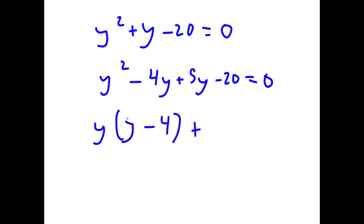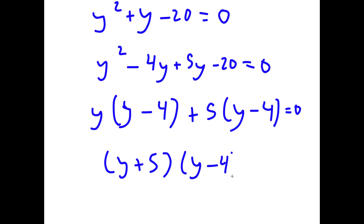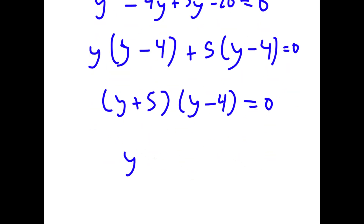From 5y minus 20, factoring out 5 gives 5 times y minus 4. So now I have y plus 5 times y minus 4 equals zero, meaning y equals negative 5 or y equals 4.